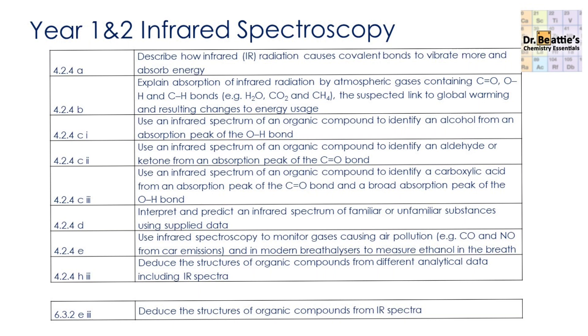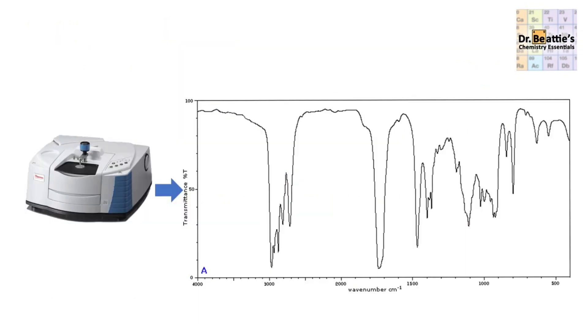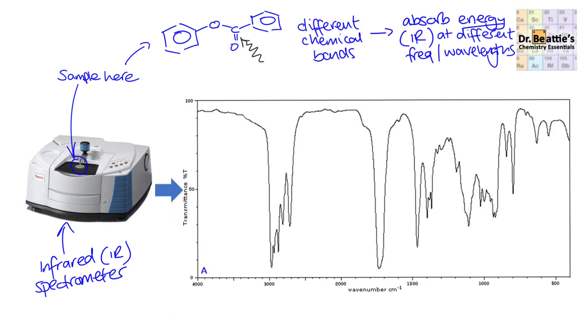We're going to have a quick look at the theory behind how infrared radiation causes spectroscopic data, then look at some characteristic stretches and the bonds that produce them. Then we're going to apply that in a setting where you use the data to deduce what functional group is there. Infrared spectroscopy starts by taking a sample and putting it into an infrared spectrometer. Within this spectrometer, infrared radiation is absorbed by the compound.